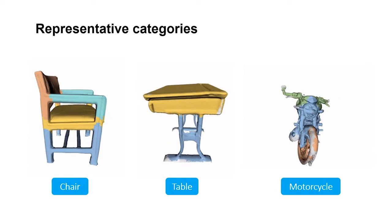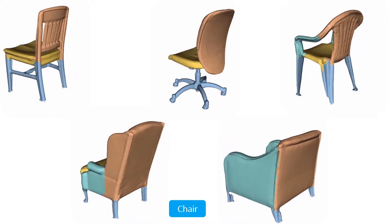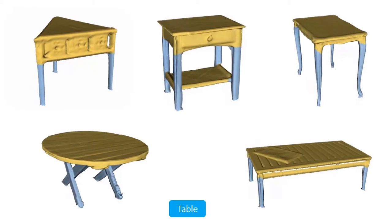We test our method on three representative categories: chairs, tables, and motorcycles. Here are some examples of reconstruction results. Note that both the reconstructions and their segmentations are of high quality, despite the complexity of the acquired shapes.